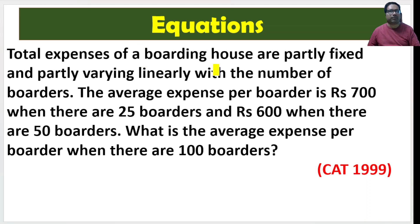Here is another very easy problem that has come in CAT. Total expenses of a boarding house are partly fixed and partly varying linearly with the number of boarders. So there is a variable cost, there is a fixed cost.